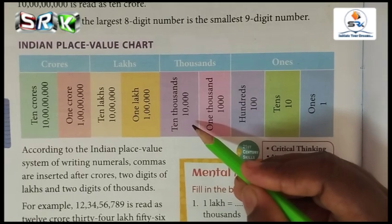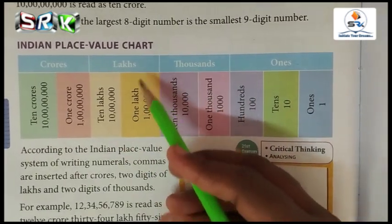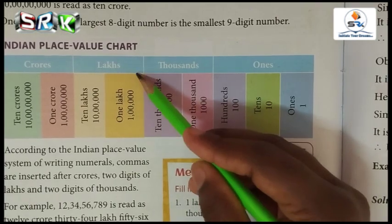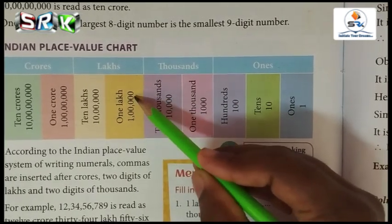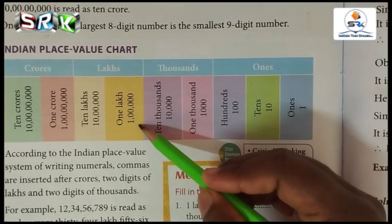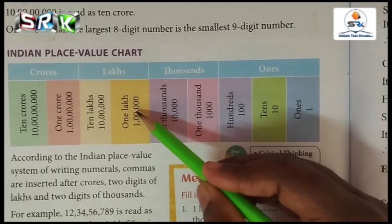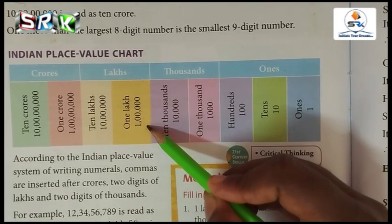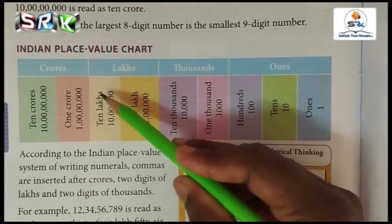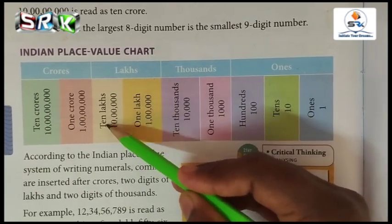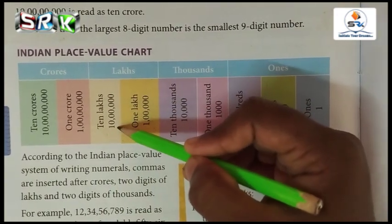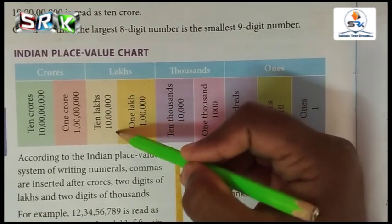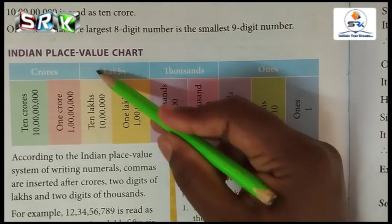Next, see the lakh. One lakh — the spelling is L-A-K-H. Count the zeros: one, two, three, four, five — five zeros, and six digits in one lakh. Next, ten lakh — how many zeros? One, two, three, four, five, six — six zeros, and seven digits. That is called ten lakh.